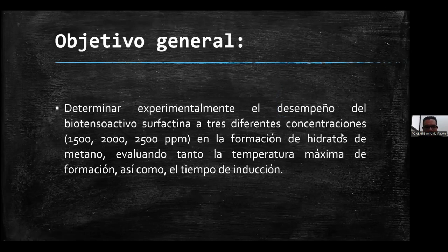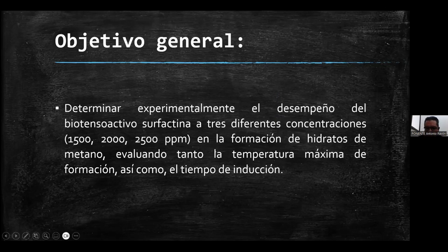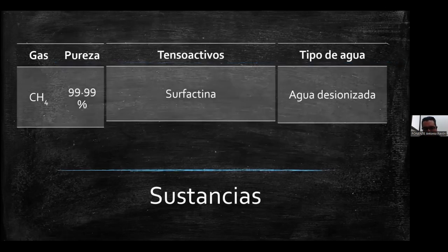El objetivo general fue determinar experimentalmente el desempeño del biotensoactivo surfactina a tres diferentes concentraciones: 1,500, 2,000 y 2,500 partes por millón, en la formación de hidratos de metano, evaluando tanto la temperatura máxima de formación como el tiempo de inducción. Las sustancias utilizadas fueron metano de pureza 99.99%, el tensoactivo surfactina y agua desionizada.